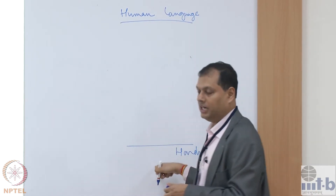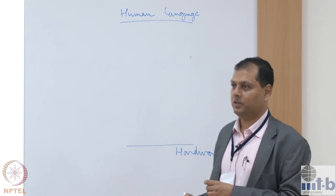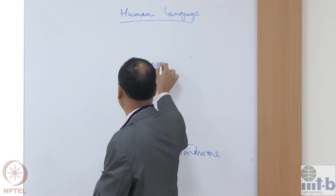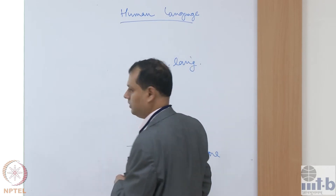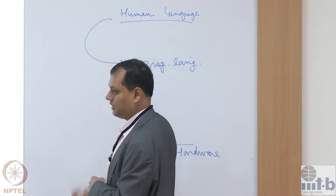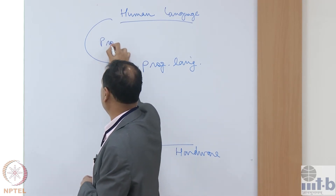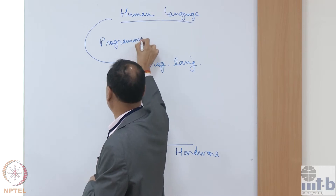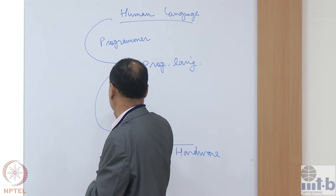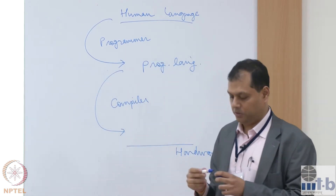So there is a gap between what the hardware knows and what a human being wants to say. This is where programming actually comes in. In between these, you will have some level which is the programming language. The task to convert from a human language description to a programming language is the job of a programmer — nowadays called a developer. And this task would be done by a compiler, to convert from the programming language to the machine language code.